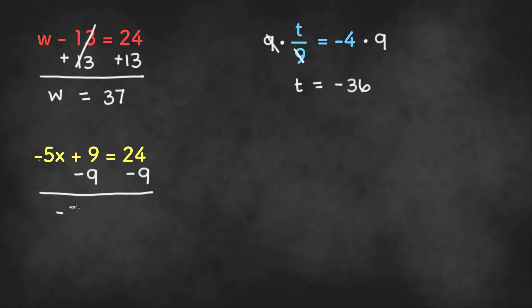Once we do so, we get negative 5x on the left-hand side and we get 24 minus 9, which is 15 on the right-hand side.